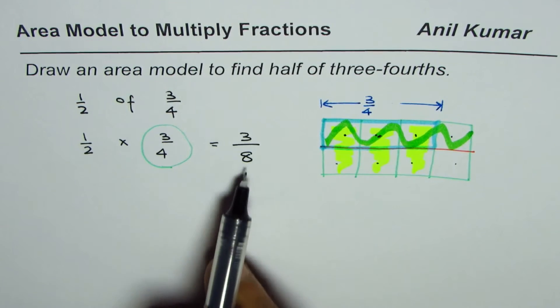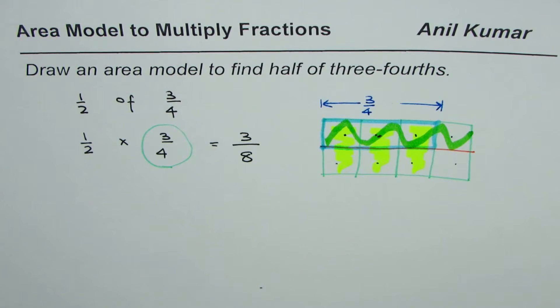So half of three-fourths is three-eighths. That is how we can solve such a question. I hope the steps are clear.